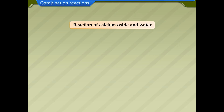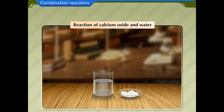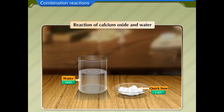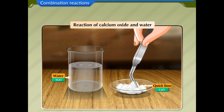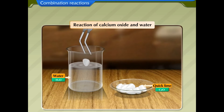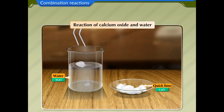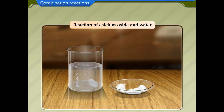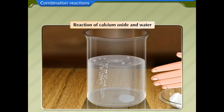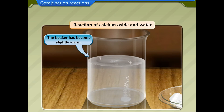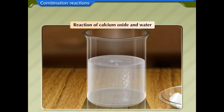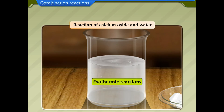Reaction of calcium oxide and water: take a beaker half filled with water and add a few pieces of quick lime or calcium oxide. As the reaction proceeds, the pieces of lime dissolve slowly. Let us touch the beaker — the beaker has become slightly warm. As calcium oxide dissolves in water, the temperature of water increases. Such reactions are called exothermic reactions.